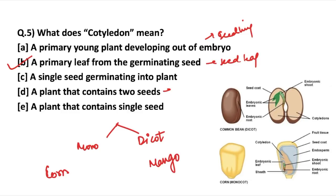This pictorial representation helps remember the difference between monocot and dicot. Other examples of monocots include bananas, garlic, ginger, grass, onion, and rice. Examples of dicots include beans, peaches, peppers, and mango.